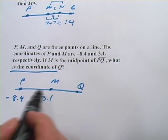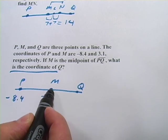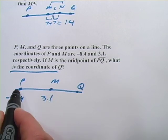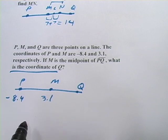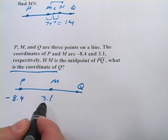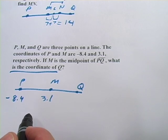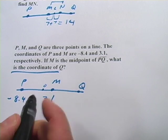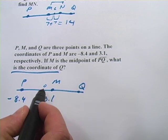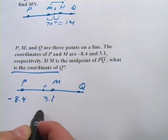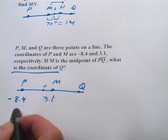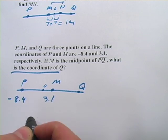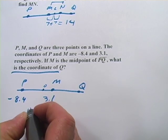What we need to do, we know the distance from P to M is going to be the same as the distance from M to Q, so we need to find the distance from P to M. So what's the distance here from negative 8.4 to 3.1? Zero is going to fall somewhere in here. And it would be 8.4 in that direction and 3.1 in that direction. So one way to think about this is that I can add 8.4 and 3.1 and get a distance of 11.5.